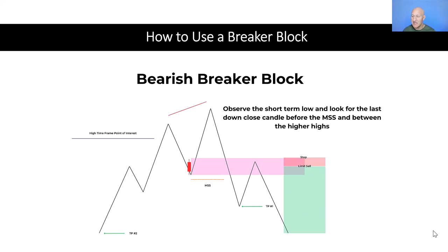One of the easiest ways to trade a breaker block is just to look at the mean threshold. The mean threshold is effectively just the 50% level on the candle — measuring from the high to the low and looking at that 50% level — which we can use as our limit sell order.